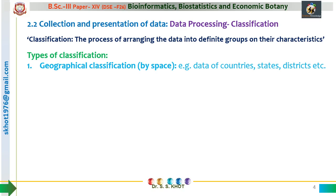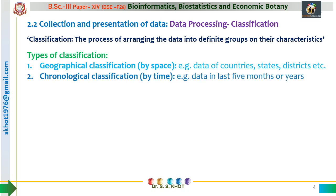The second type is chronological classification. This classification is based on the time parameter. Data collected at different time intervals is represented in different groups. For example, data collected about COVID-19 patients during the last 5 months or 5 years, or the progress of students in a class during the last 5 years. Here we can compare the progress of a specific event as a function of time. Chronological classification is also useful to analyze the impact of time on a particular process.